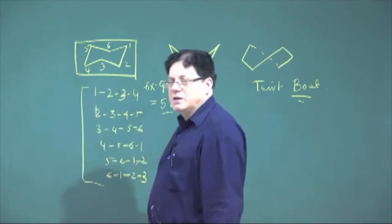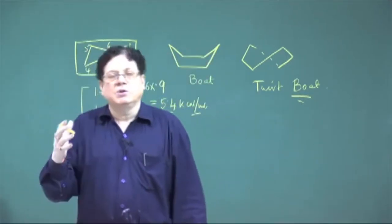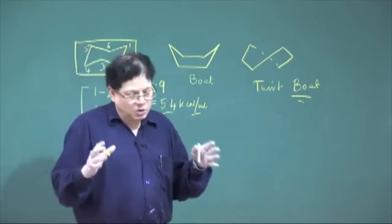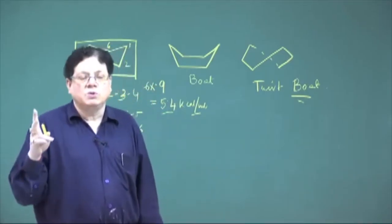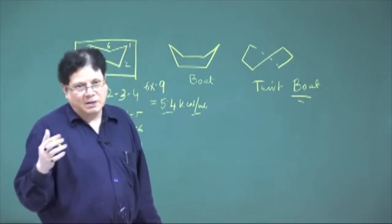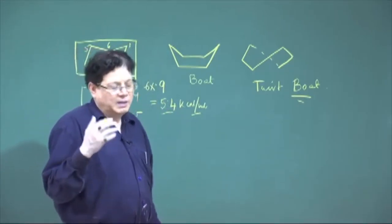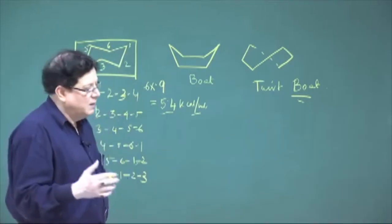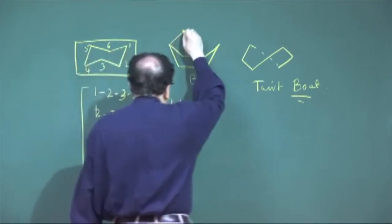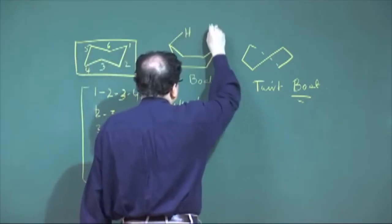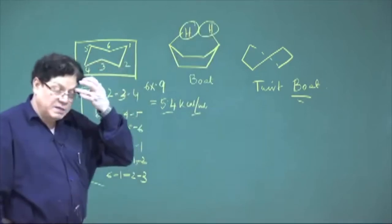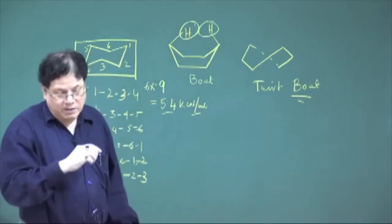In the boat form, by contrast, there are 4 butane units in the gauche conformation and 2 butane units in the eclipsed form. The eclipsed form has higher energy than the gauche form, so those 2 eclipsed units add quite a large amount of energy. Additionally, there is the interaction between the flagpole hydrogens in the boat form, which makes the boat unstable.